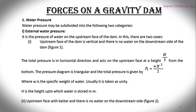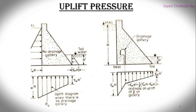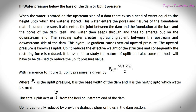When the upstream face is sloped, in addition to the horizontal water pressure P1, there is a vertical pressure of water due to the water column resting on the upstream slope face. The water pressure on the downstream face actually stabilizes the dam; hence, as an additional factor of safety, it may be neglected.